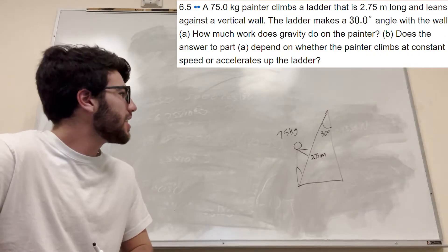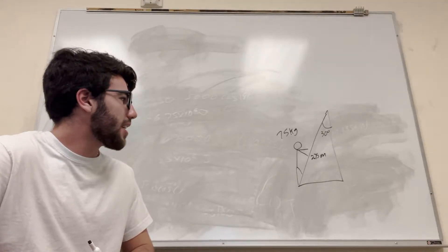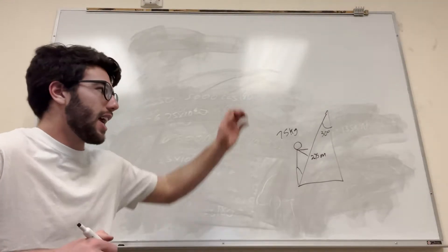Okay, so let's look at what we know here. So our weight is 75 kilograms, the ladder is 2.75 meters, and it makes a 30 degree angle at the wall.